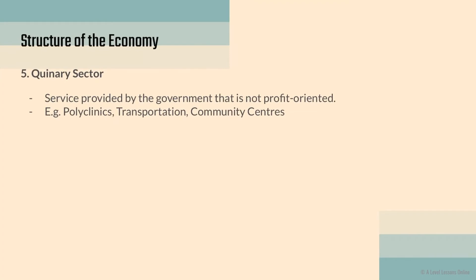The quinary sector refers to services provided by the government — above normal private firms, belonging to the public sector and not profit-oriented. Things like polyclinics, public transportation, and community centers — services that are either highly subsidized or free of charge — belong to the quinary sector. This is where we find public goods, and these state-owned firms belong to the quinary sector.